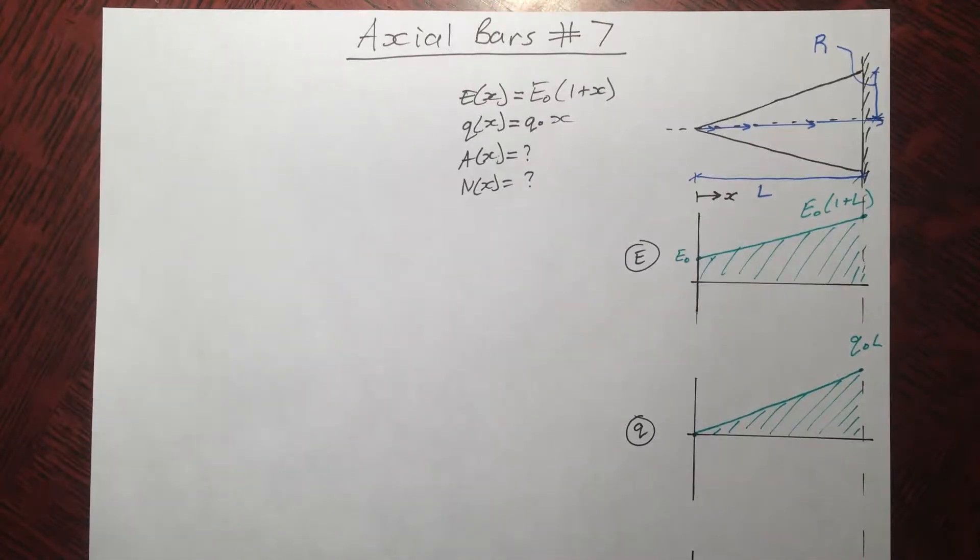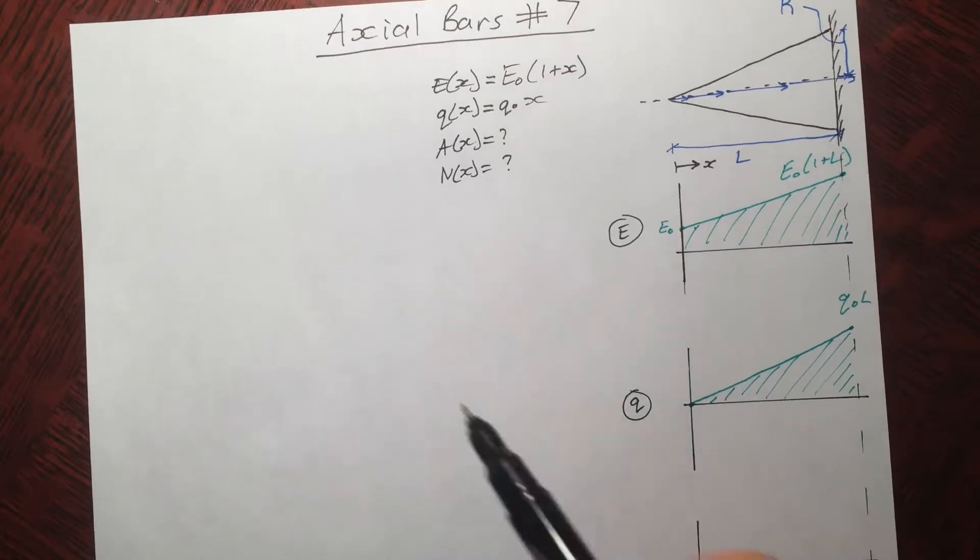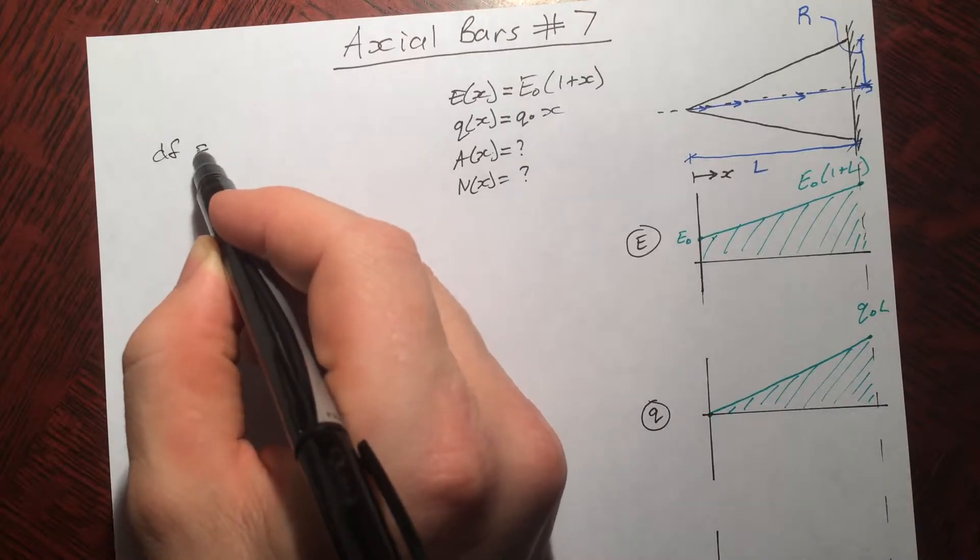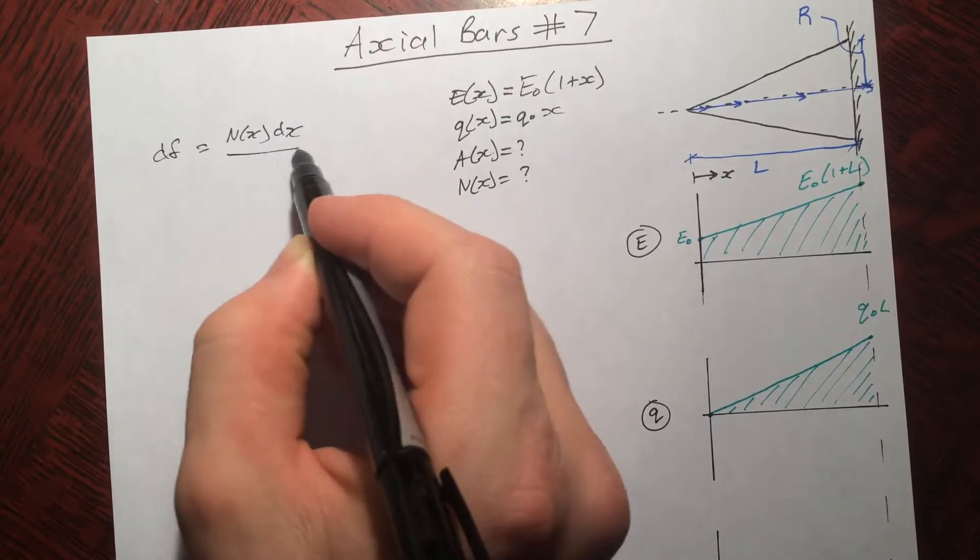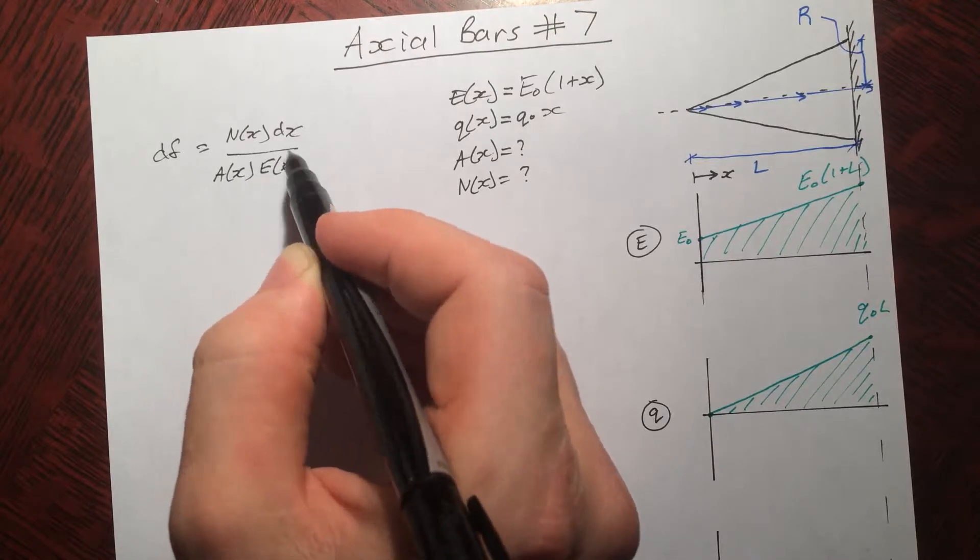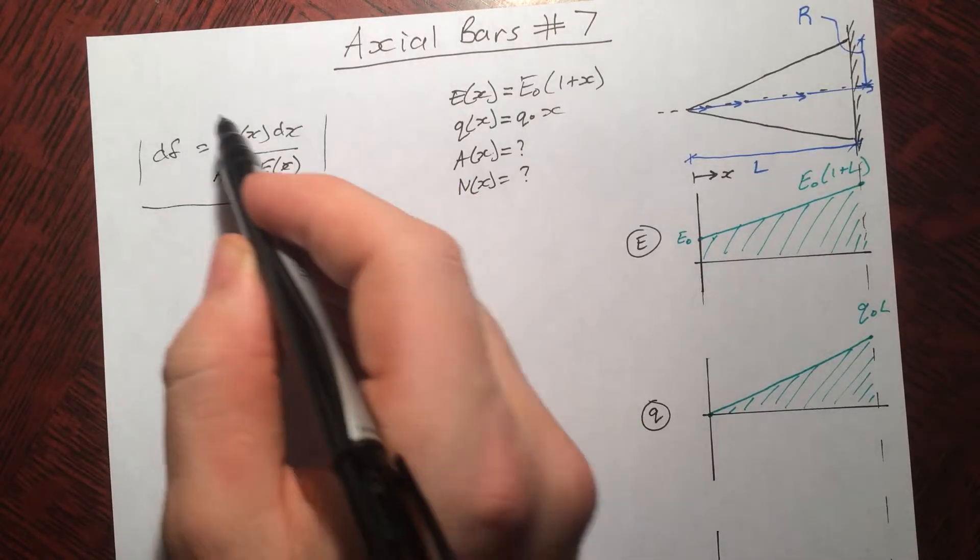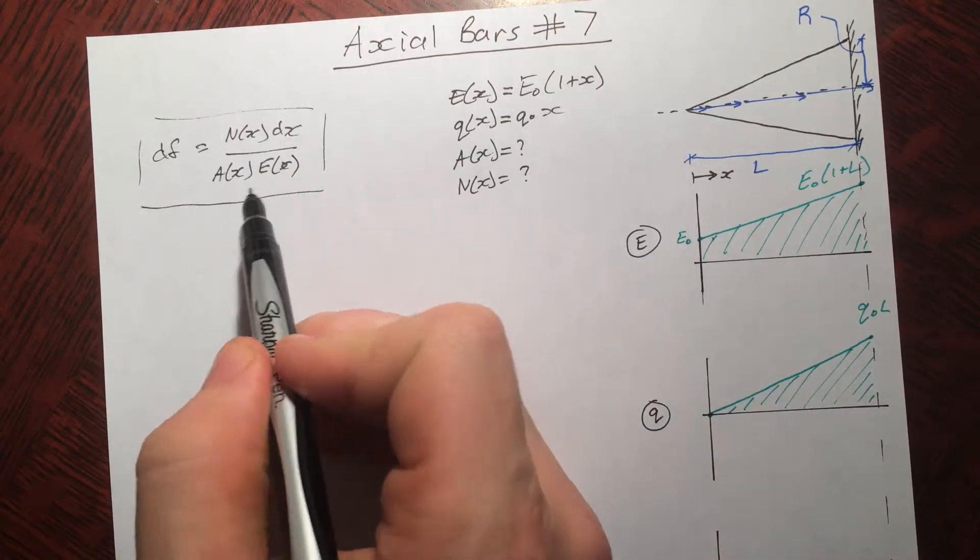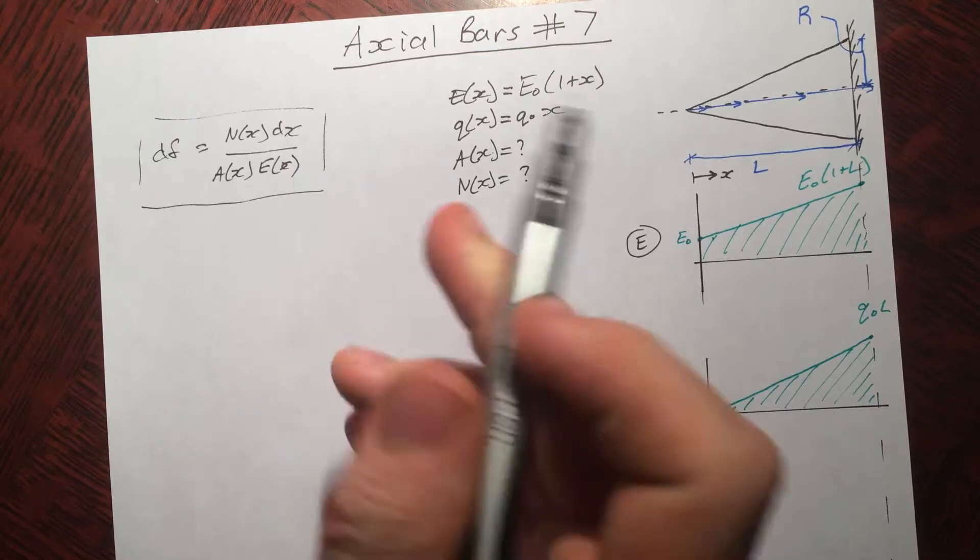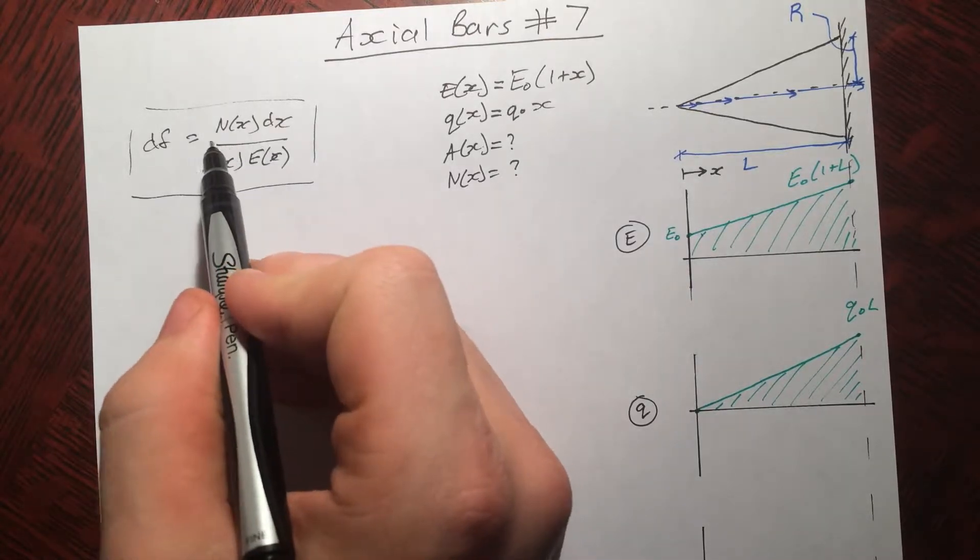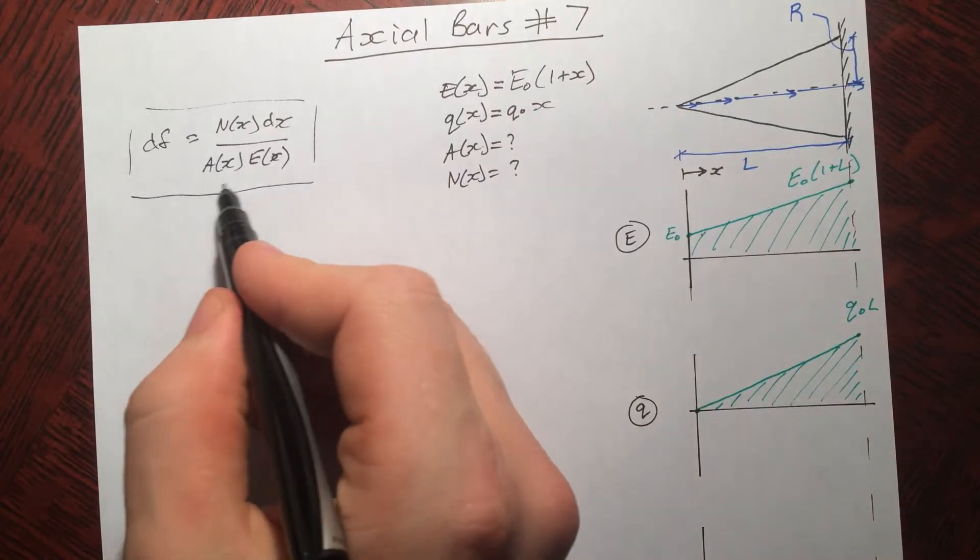If you remember, we developed this equation that we're trying to satisfy all the variables for. It was this. d delta is n as a function of x, dx over a as a function of x, e as a function of x. So what I've been doing here is trying to find all of these conditions. So find n as a function of x, find a as a function of x, and e as a function of x.